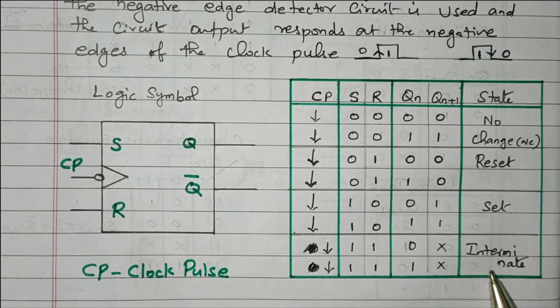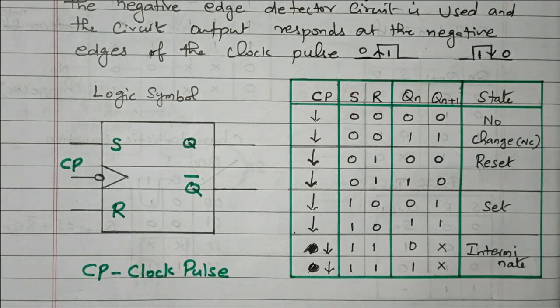In this video we discussed the negative edge triggered SR flip-flop: its logic symbol and truth table. For the positive edge triggered flip-flop, more details including the circuit, excitation table, truth table, logic symbol, and verification of output are available in the previous video. Subscribe this channel for more videos and notifications. The soft copy of this material is available in the drive; the link is in the description box. Thank you for listening.